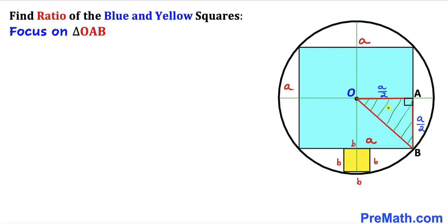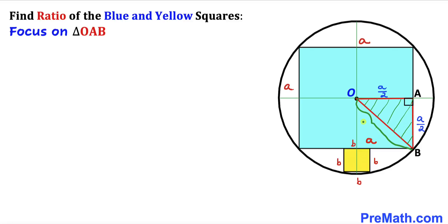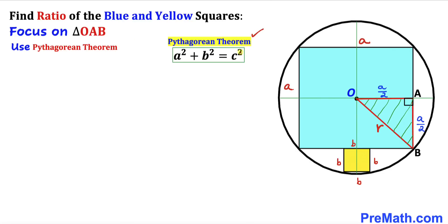Let's focus on right triangle OAB, constructed by connecting center O with point A and point B. Side OA is a/2, side AB is a/2, and OB is the radius of the circle, which I'll represent by lowercase r. Since we're dealing with a right triangle, we'll apply the Pythagorean theorem.